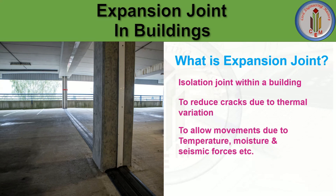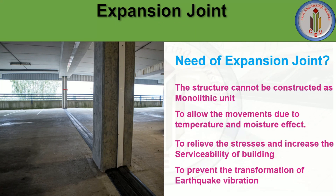The expansion joint also helps to reduce cracking due to thermal variation. Due to temperature changes, the building may tend to expand or contract, so to avoid that we need to provide this expansion joint. It also allows movement due to temperature, moisture, and seismic forces. The joint ensures separation between adjacent members to allow one member to move independently of the other.